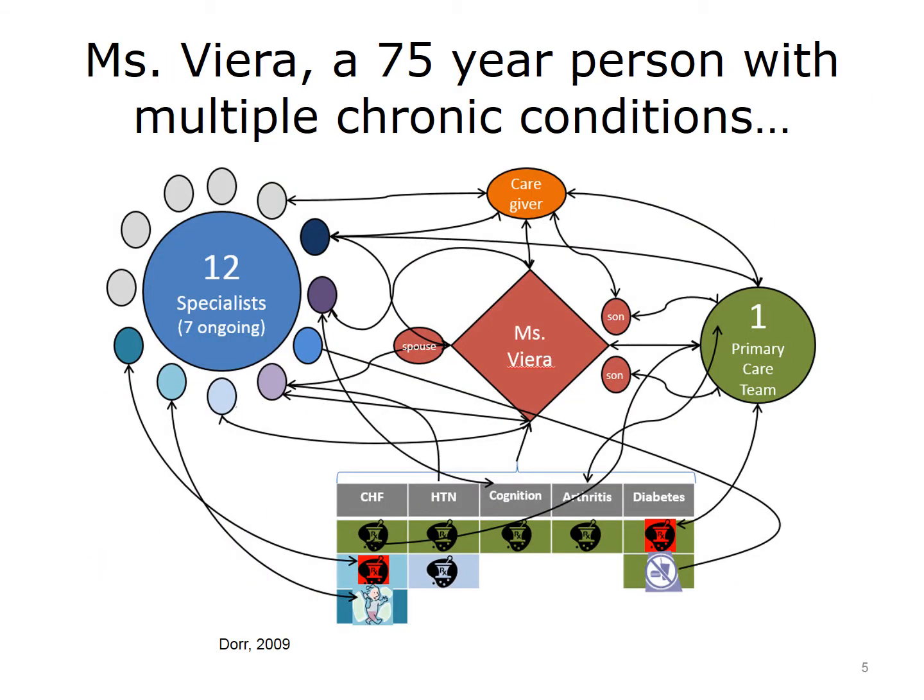This messy diagram is intended to show the information flow as Ms. Fiera, a person with five complex chronic conditions, interacts with the healthcare system over the course of one year. If we were to estimate outcomes for her, we would find that she has 90 times the rate of hospitalizations as someone with no chronic conditions, that she takes on average 14 medications, and that she'll see 12 specialists during that one year.